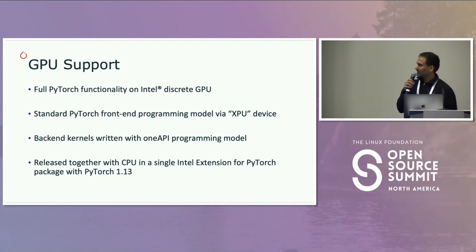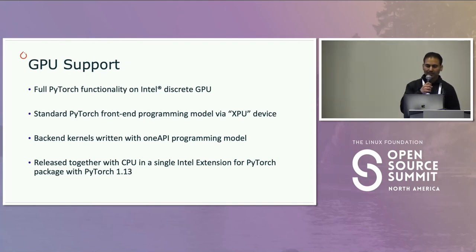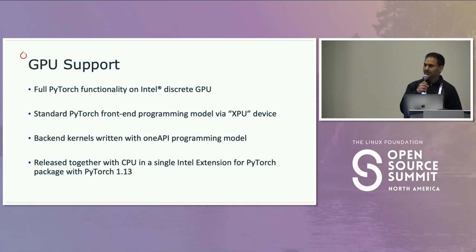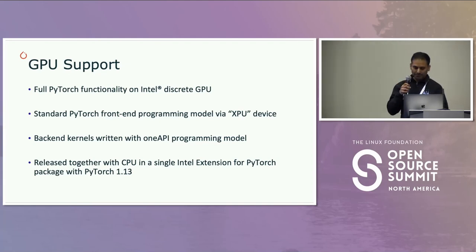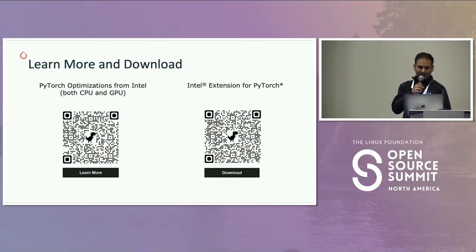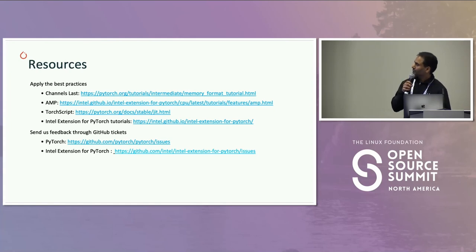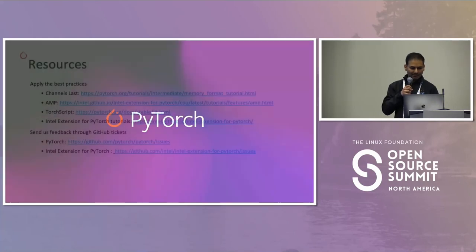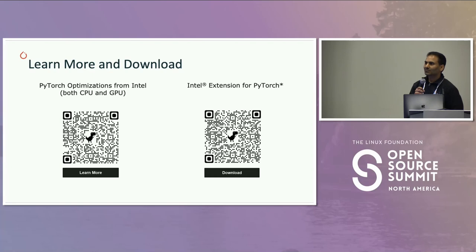Finally, GPU support: we have full GPU support for Intel GPUs. The interface is through standard API — we have this concept of XPU device. The backend kernels are implemented using the oneAPI programming model. This is released together in the same Intel Extension for PyTorch. If you go to the Intel Extension for PyTorch GitHub repository, it supports both CPU and GPU starting with the 1.13 release. I'll leave the resource links there. If you have any questions I can take them.